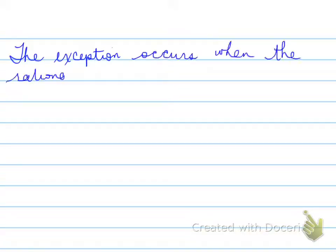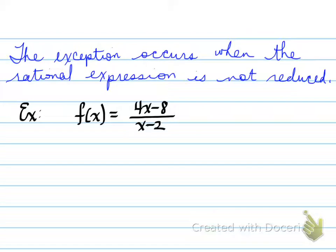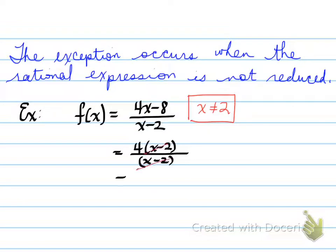There is an exception: the exception occurs when the rational expression is not fully reduced. For example, if the expression is not reduced, you need to state the restrictions, find the common factor, and notice that it gets canceled. That means x = 2 is no longer a vertical asymptote but turns into a hole — a hole at x = 2. That results in a horizontal line at y = 4, but with a hole at the point (2, 4).